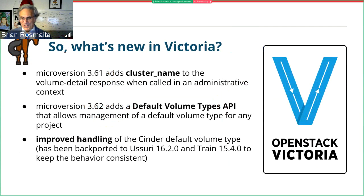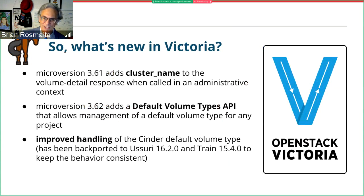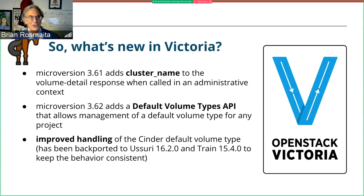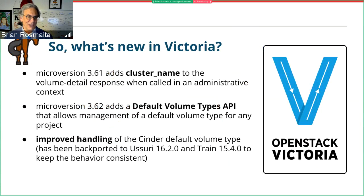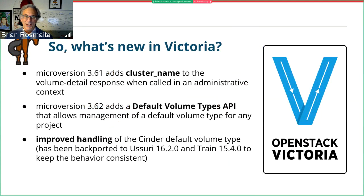Here's what's new in Victoria. MicroVersion 3.61 adds the cluster name to the volume detail response if it's called in an administrative context. Regular end users don't see it, but administrators do, and that can be very helpful when troubleshooting.